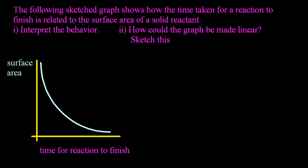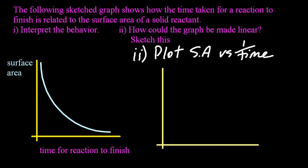So how could the graph be made linear? Well, I could plot surface area versus one over time, and that will give me a linear graph. Now don't forget, you have to put in the axis labels. And we're done.